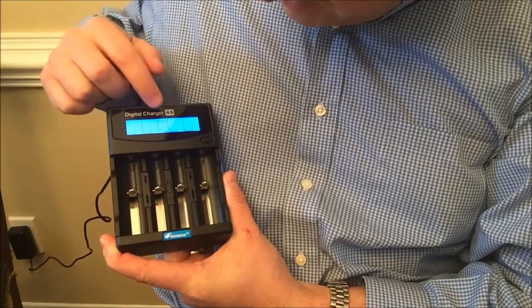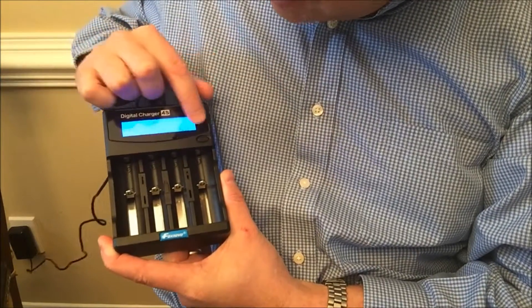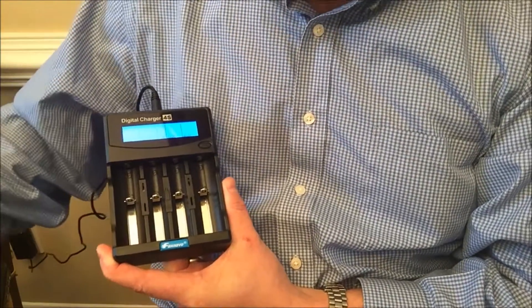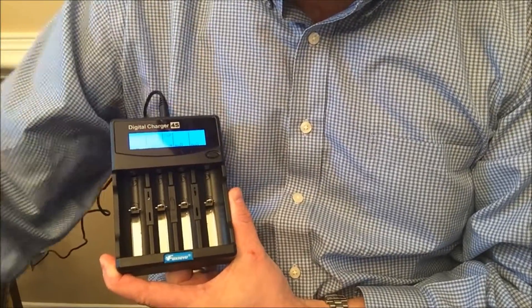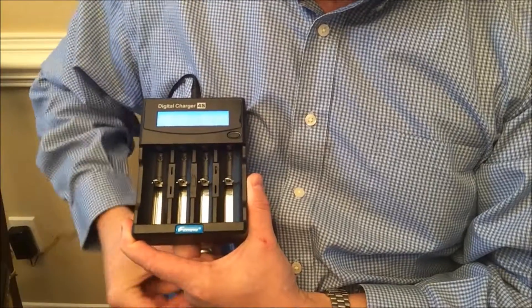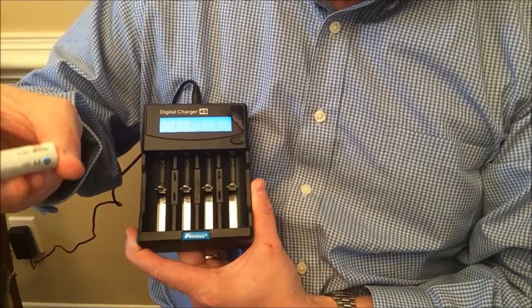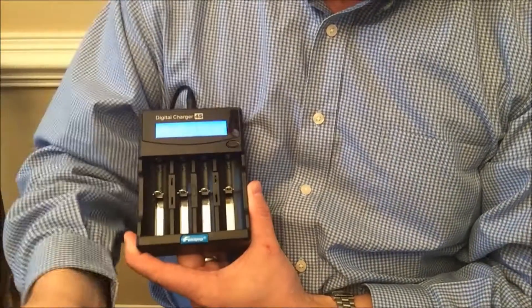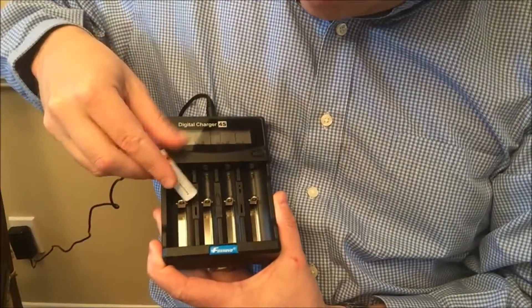At the top, it says 0.5 amps charge, and all of these are saying null because there's nothing in there. So I want to show you this is a 1.2-volt NiMH loop battery. I just want to show you a double-A battery and you just pop it in here.